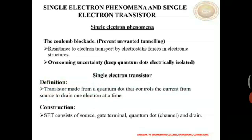The rules behind the single electron phenomena are: first, Coulomb blockade, and the second one, overcoming uncertainty. Coulomb blockade is nothing but electrostatic repulsion. When a quantum dot is in nano size, its capacitance value decreases. If the size is large, it has greater capacitance. It is the charging effect which blocks the injection or rejection of a single charge into or from a quantum dot.